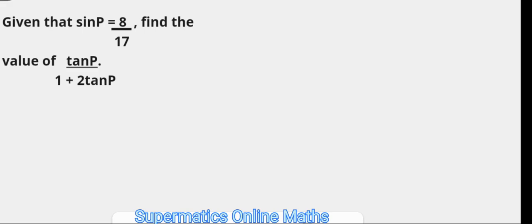In the second problem, we're given that sin P is 8 over 17, so we have to find the value of tan P over 1 plus 2 tan P. The first thing we do here is to try and draw a right triangle. Having drawn the right triangle, let us take angle P to be here, and the sine of any angle is the ratio of its opposite side, which is 8, to the hypotenuse side, the longest side, which is 17.